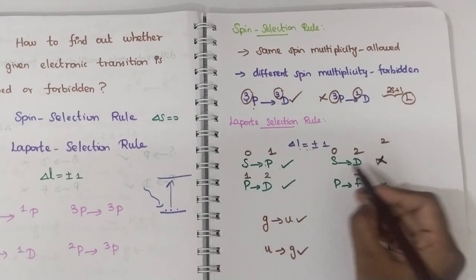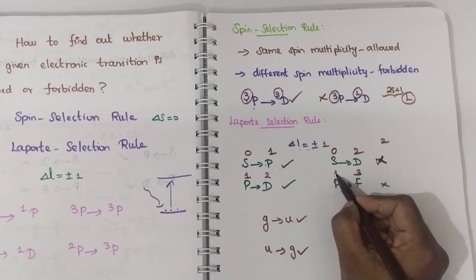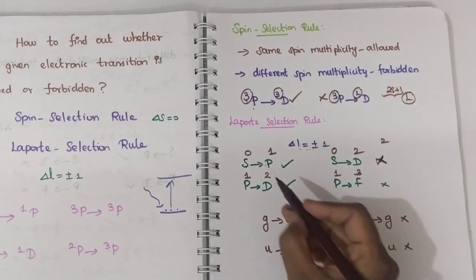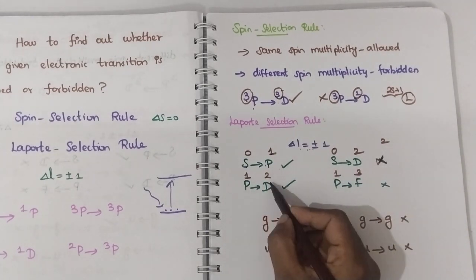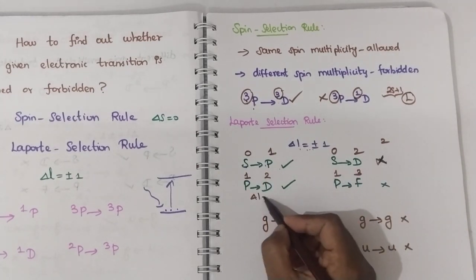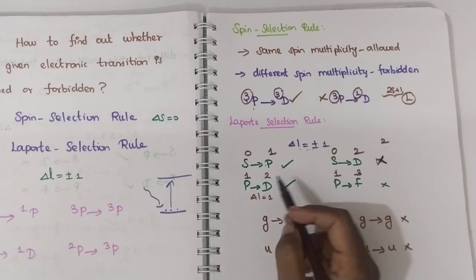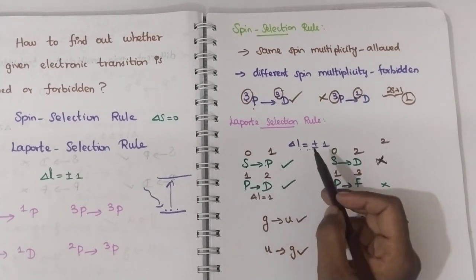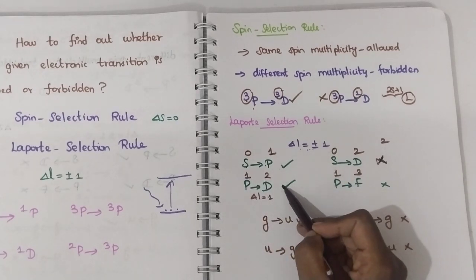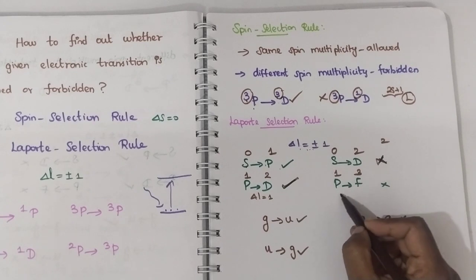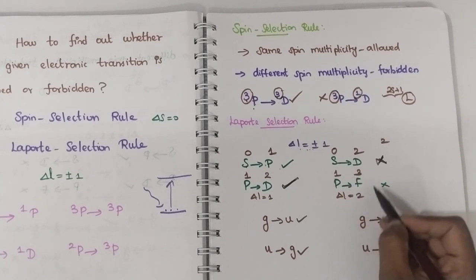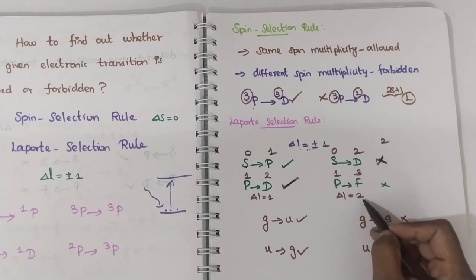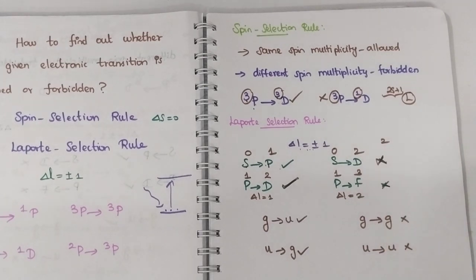Similarly, for a P to D transition, the L values are 1 and 2, so the difference is 1 — that is Laporte-allowed. But for P to F, the L values are 1 and 3, and the difference is 2, so that is a forbidden transition.